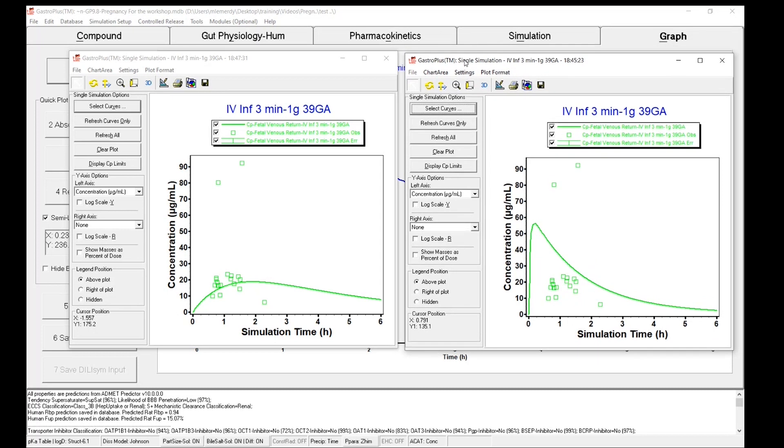And here in these two plots, you can see on the right side when I had a perfusion limited placenta. And on the left side when I had a permeability limited placenta. And it seems the concentrations are much better described as such.